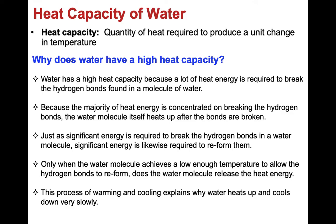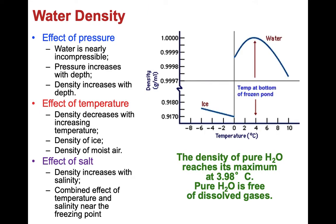Because of this high heat capacity of water, oceans usually warm up very slowly in the spring and until early summer. But then, as the continents cool down very fast, the oceans cool down very slowly all the way to late December and early January.